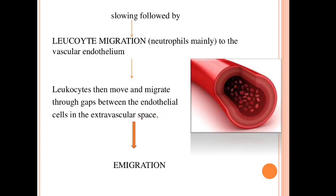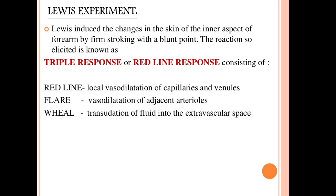Next is leukocyte migration. WBC cells, particularly neutrophils, escape from the endothelium and migrate to the particular inflammation area into the extravascular space. This is called the triple response, also known as the red line response: red line, flush, flare, and wheal.